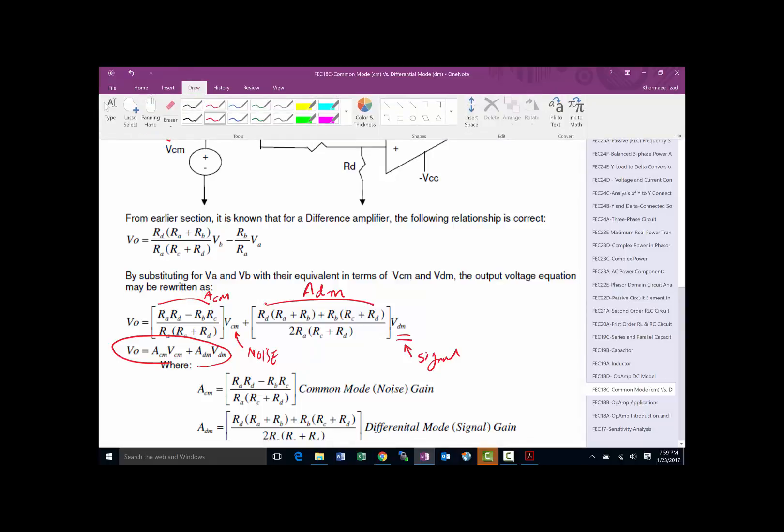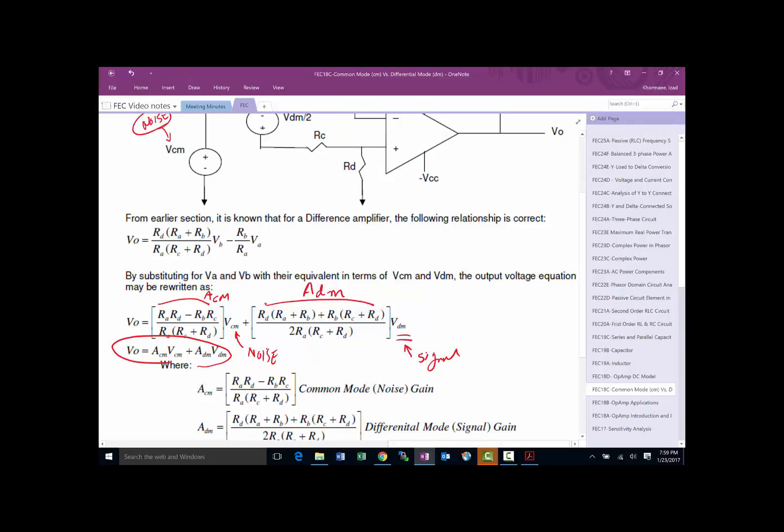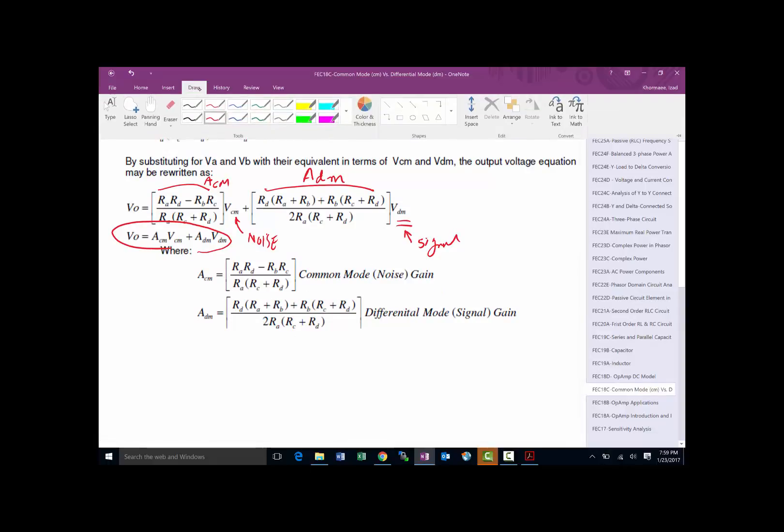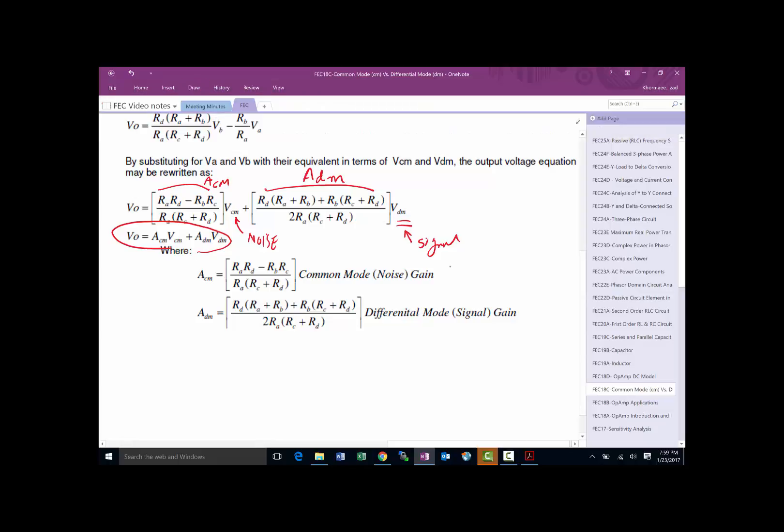Having said that, our goal is to make sure the output has minimum effect from the noise. So our goal is to minimize the gain of noise and maximize the effect of signal on the output. We want to maximize this gain and eliminate or minimize the other gain.